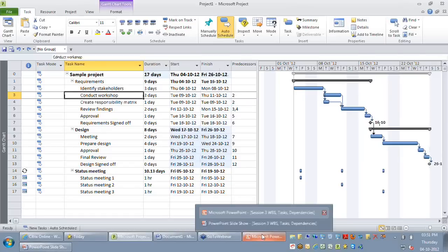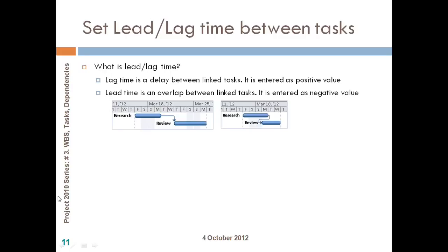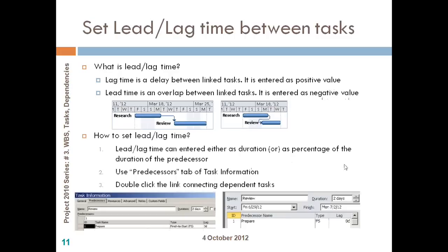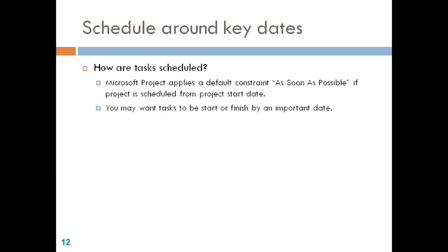To summarize: lag time is represented by a positive value, whereas lead time is represented by a negative value. You can provide either a fixed duration or a percentage-based value. You can either use the predecessors column or the task dependencies form to set the lag or the lead.